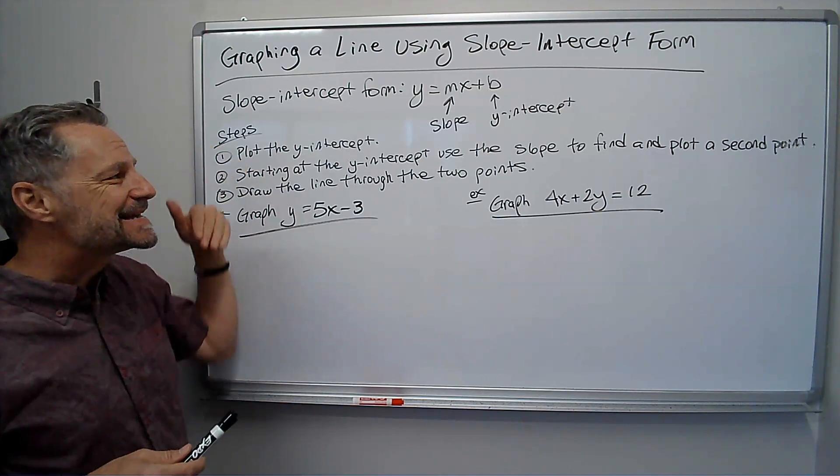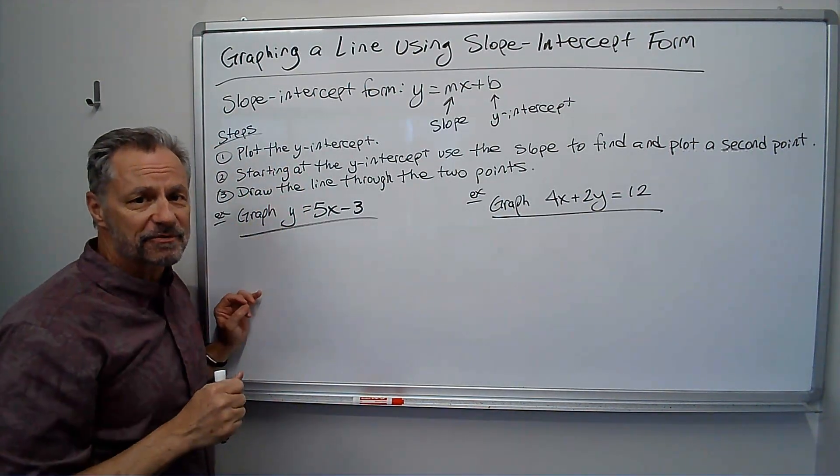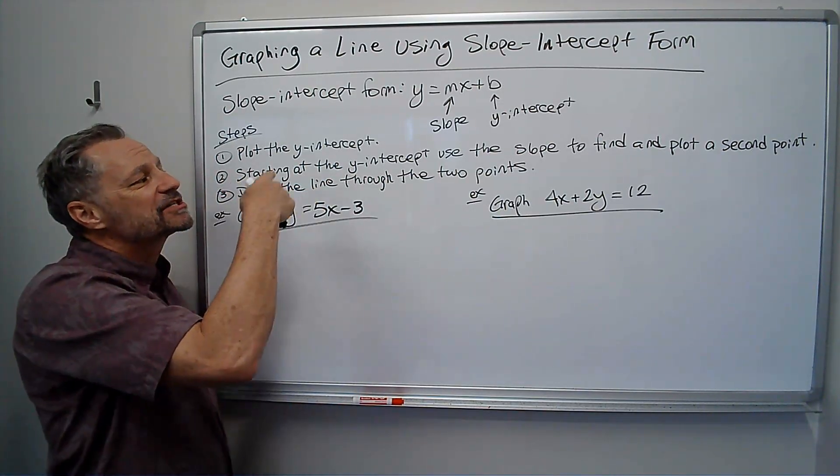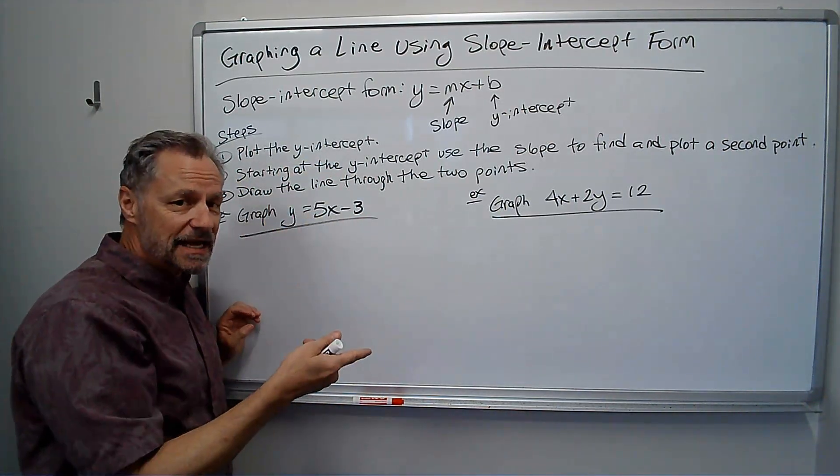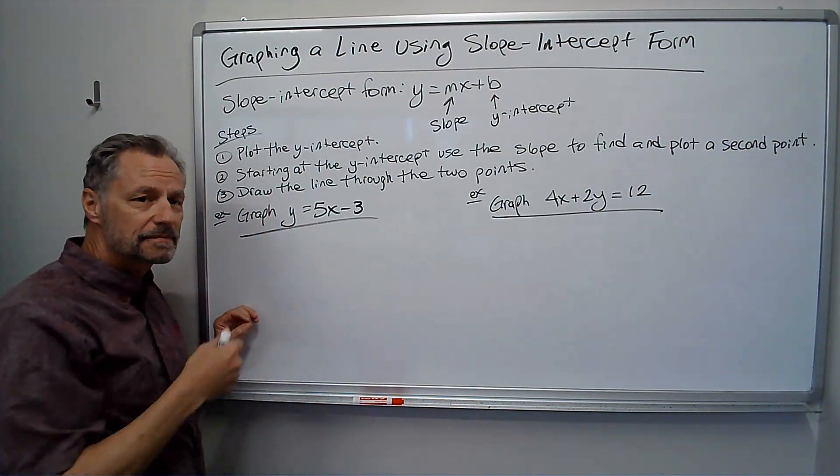So the idea is when I'm going to graph this, I'm going to plot the y-intercept as my first point. Starting at the y-intercept, I'm going to use the slope to find a second point, plot that point, and then just draw the line through those two points. Let me show you what I mean.